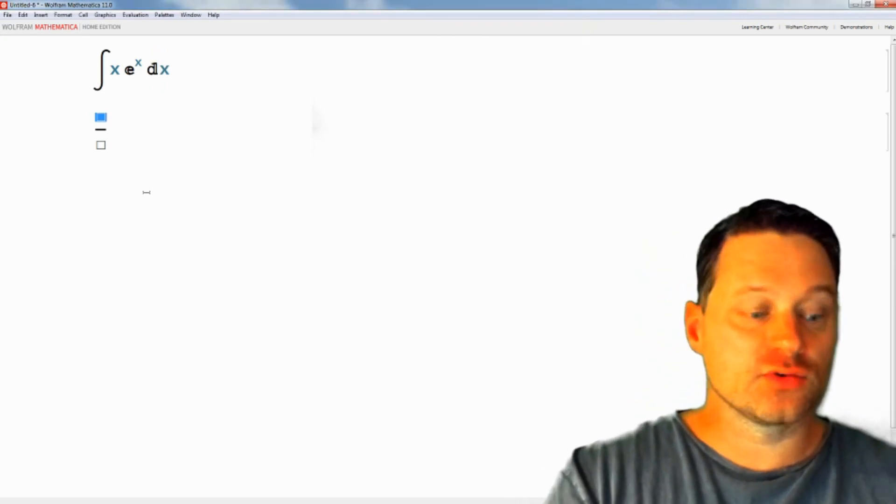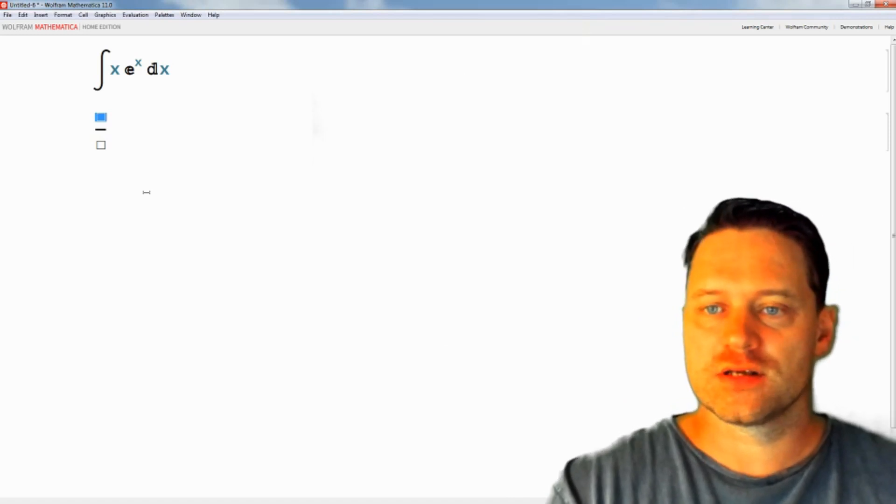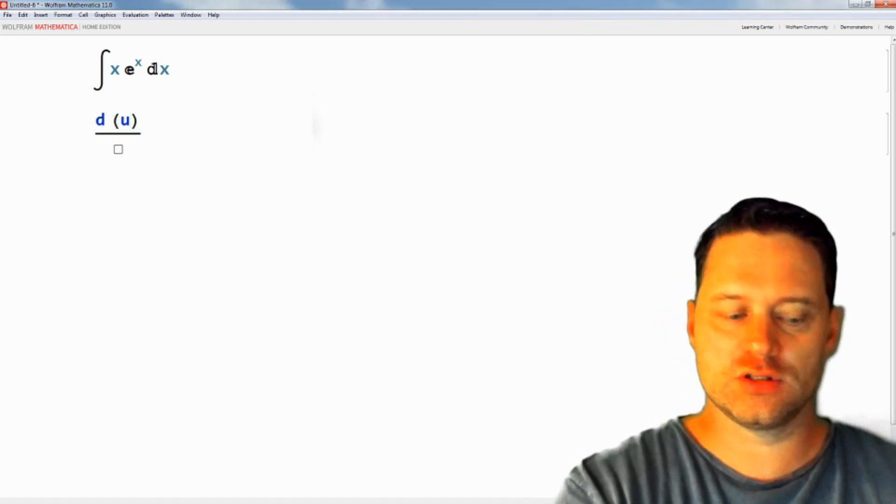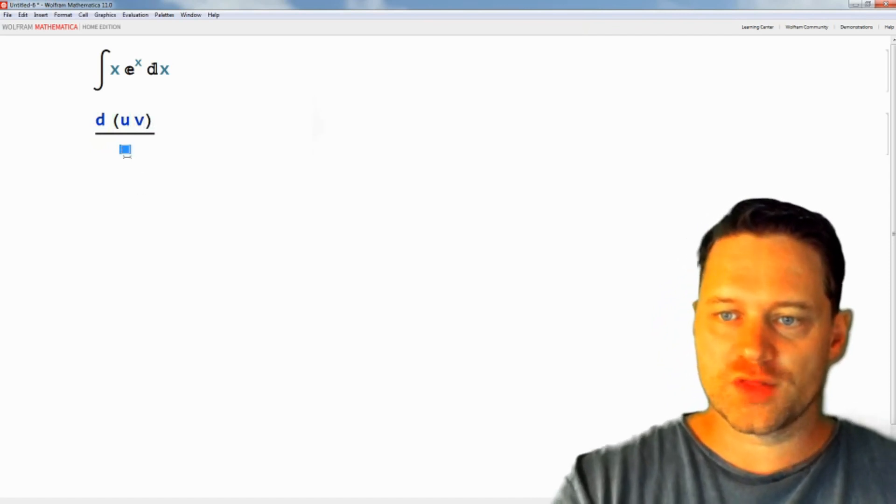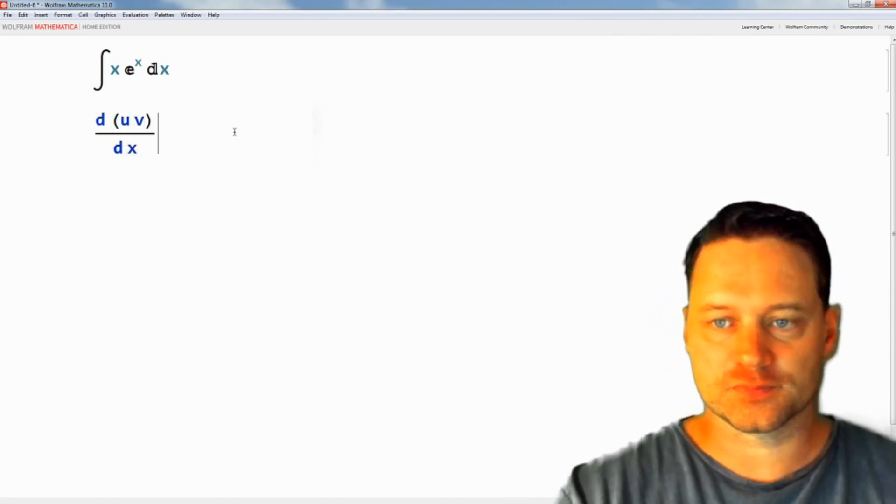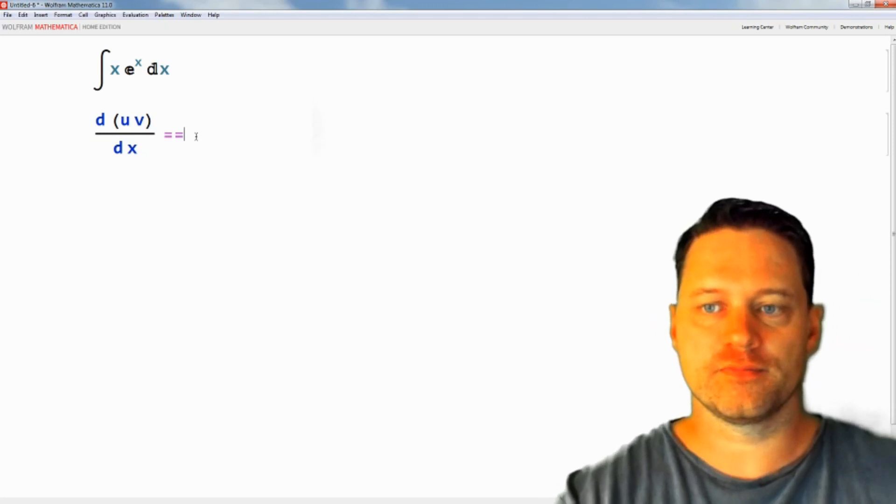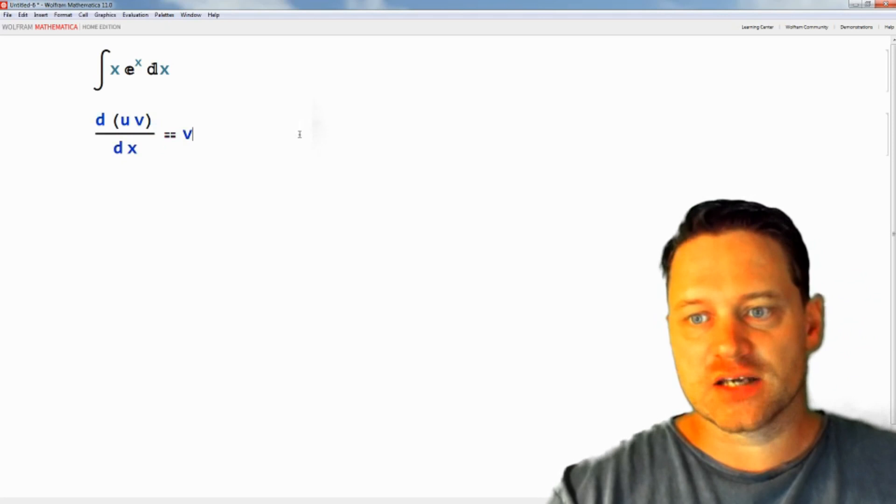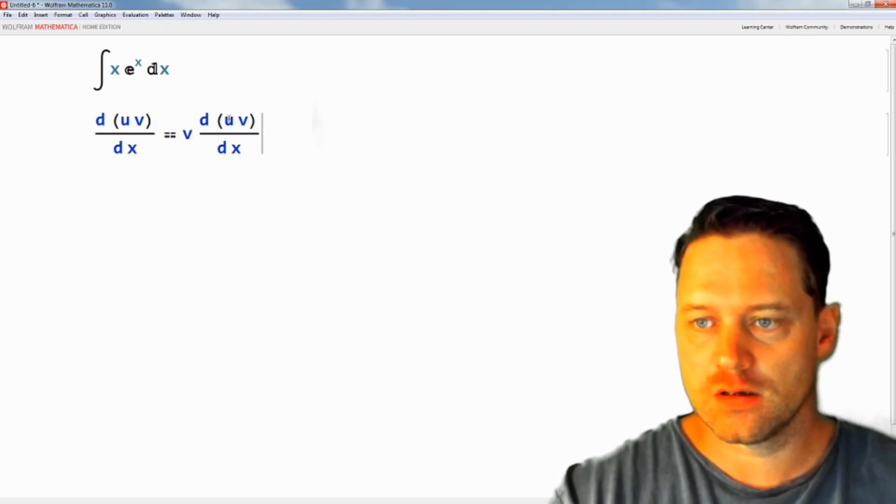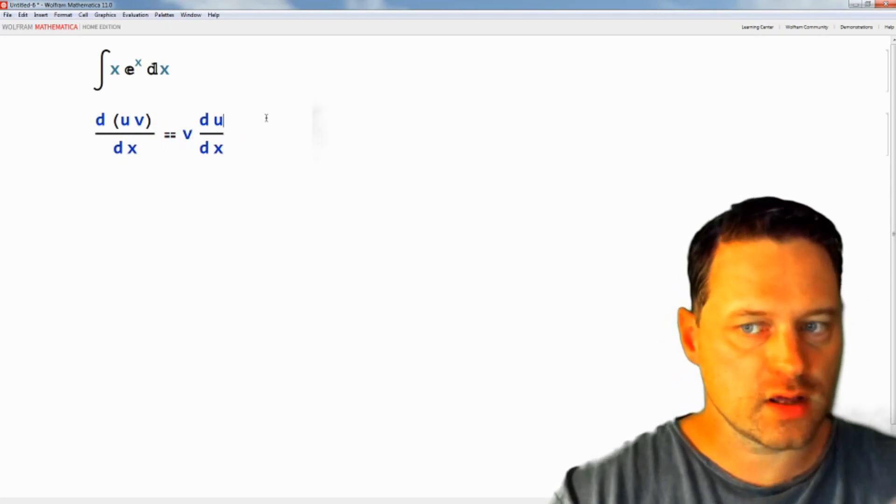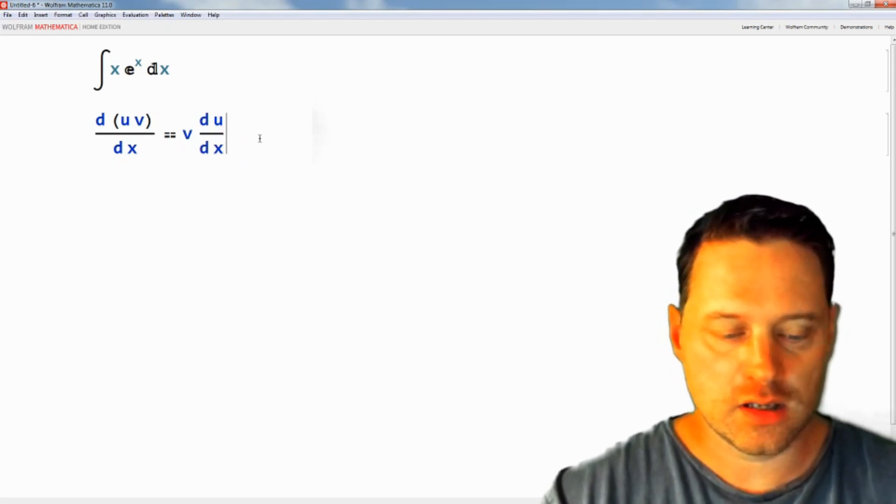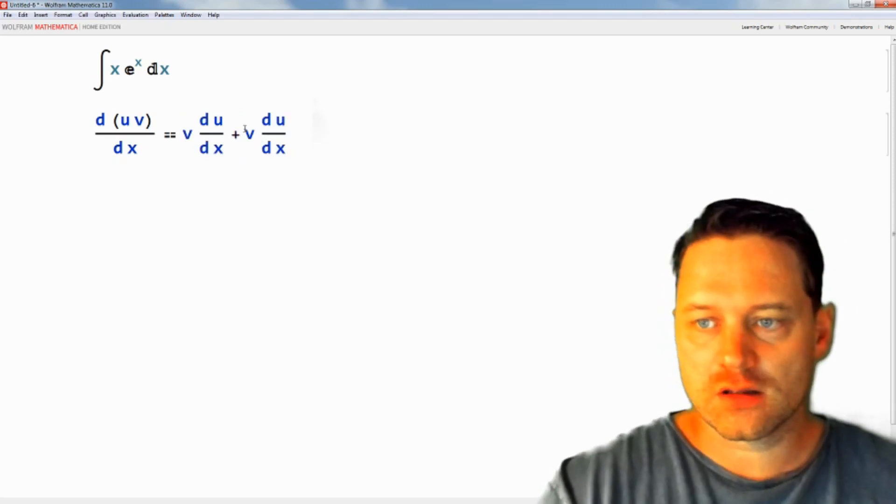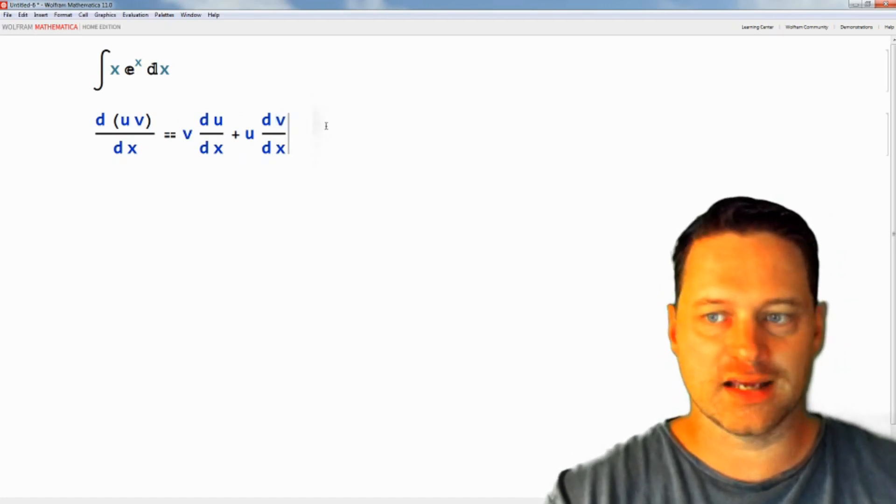Now that I have that, remember the product rule for differentiating. That says that the derivative of the product of u times v with respect to x is equal to v times the derivative of u with respect to x, plus the other way around, u times dv/dx.